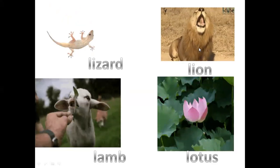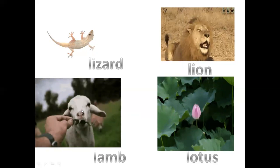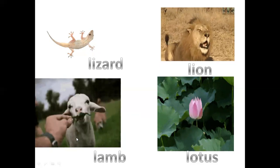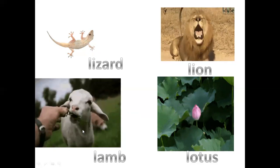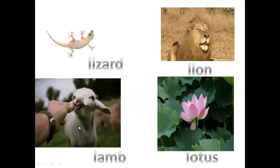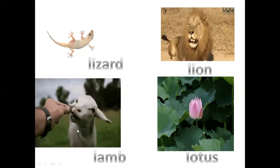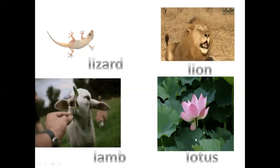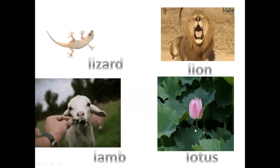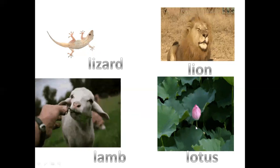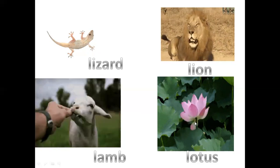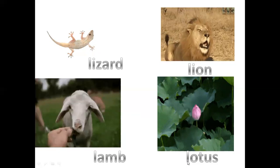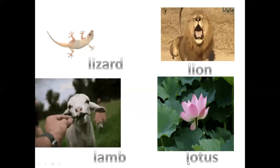You can see the lion roaring. And what is this? This is a lamb — Mary had a little lamb! And you can see it's eating a leaf. L for leaf, L for lamb. And here you see a lotus blooming. You can see a bud blooming into a big flower. This is lotus. L, la, lotus.